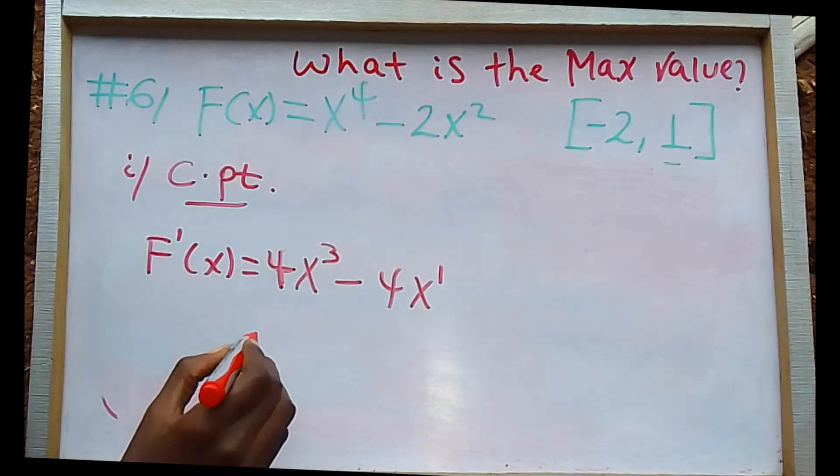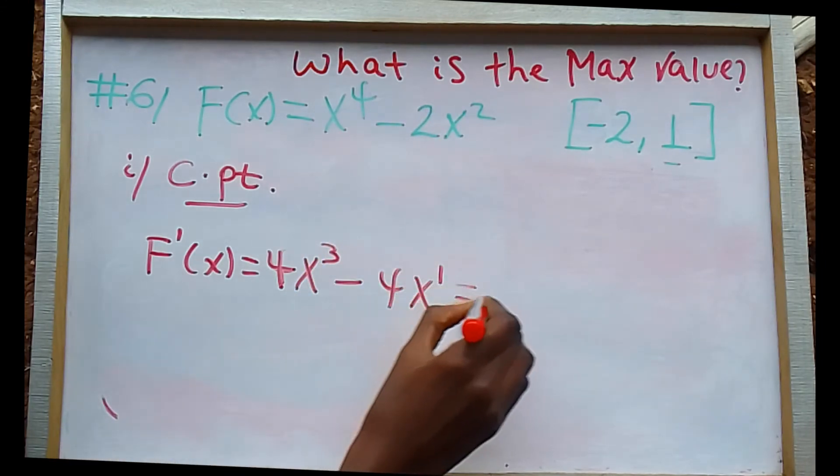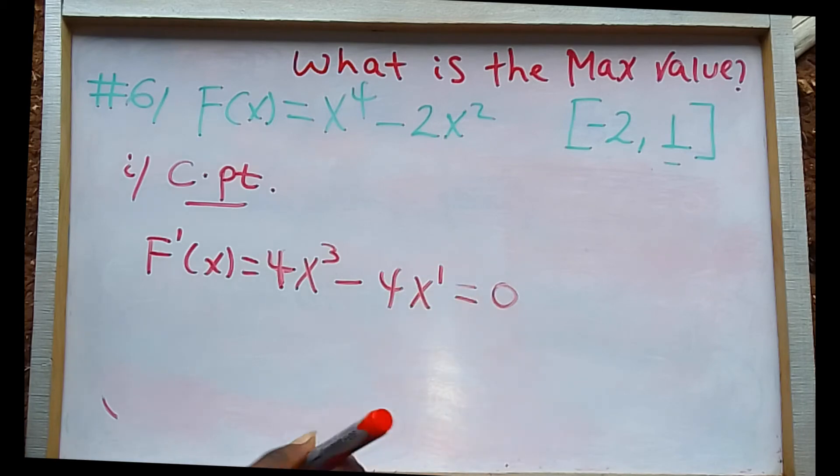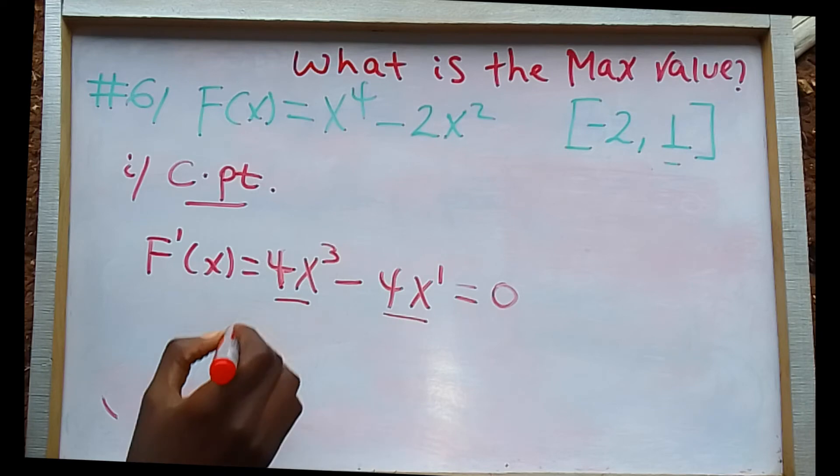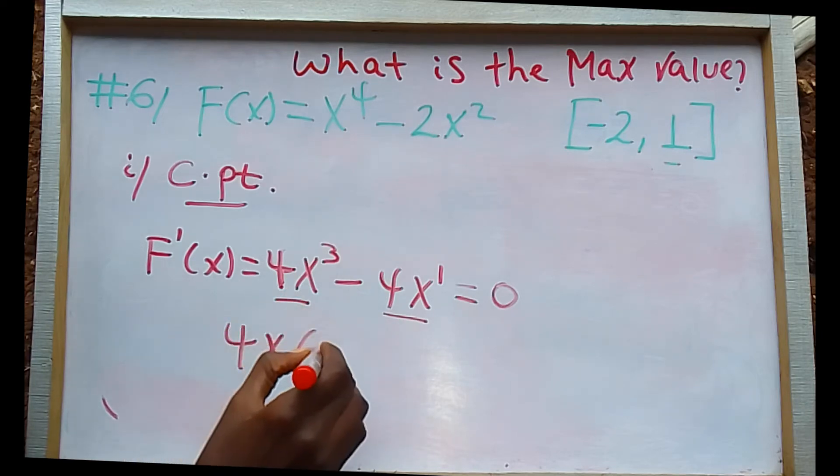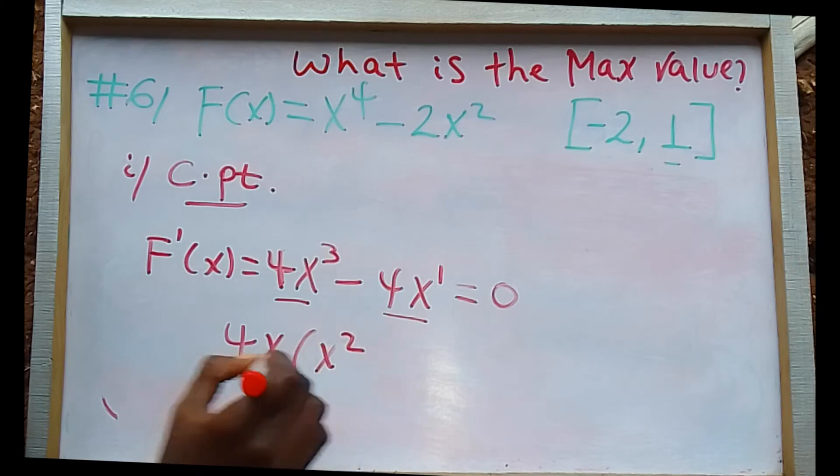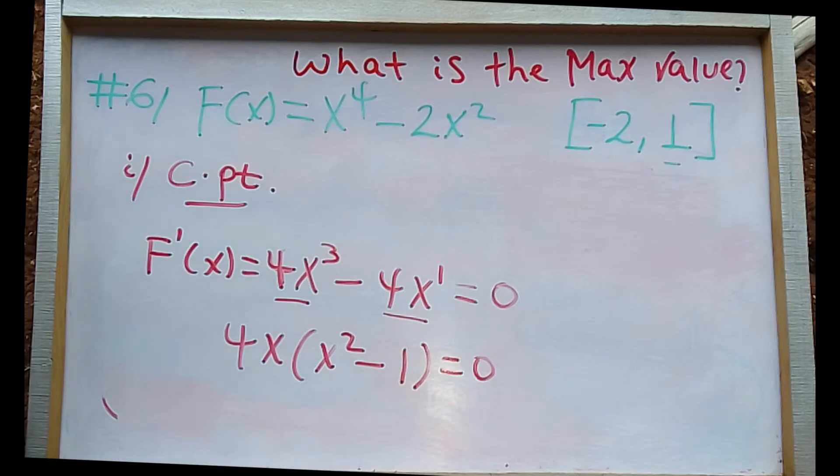This term is 0. Factor out the common term 4x. So 4x times (x squared minus 1) equals 0.